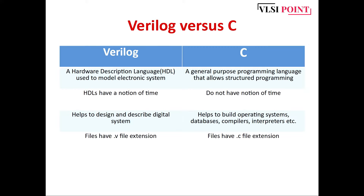Verilog is a hardware description language used to model electronic systems, whereas C is a general purpose programming language for structured programming. HDLs have the notion of time; C does not. Verilog helps to design and describe digital systems, while C helps build operating systems, databases, compilers, and interpreters. Verilog file extension is .v; C file extension is .c.